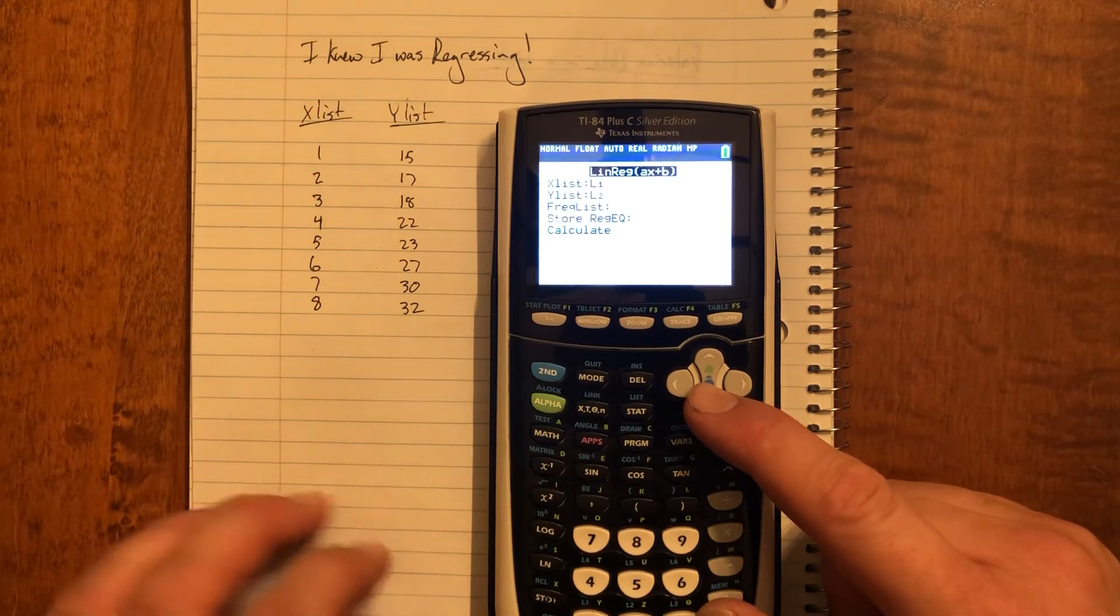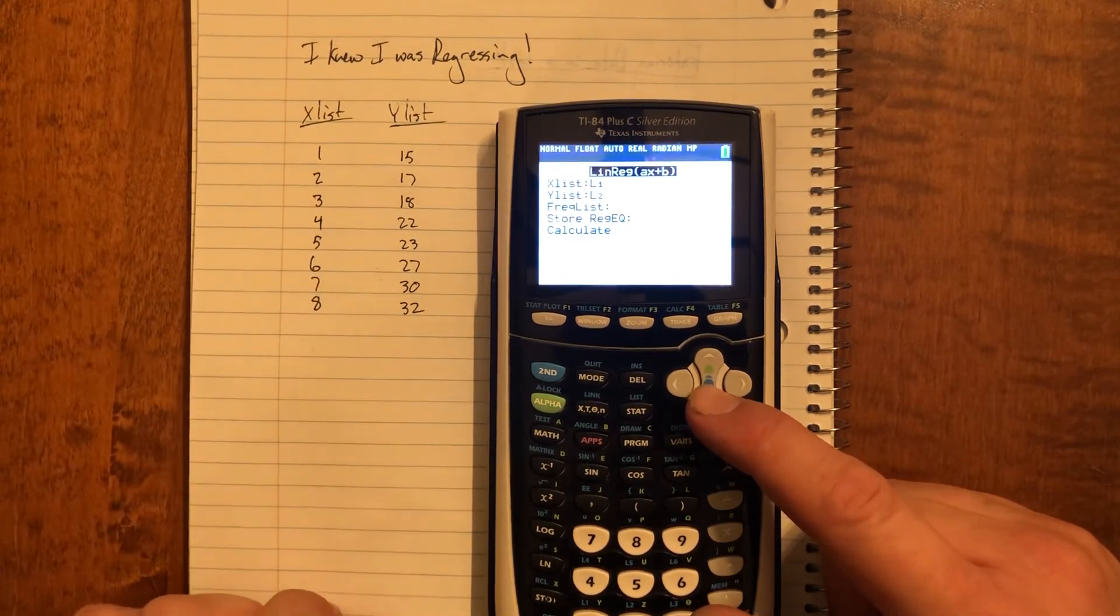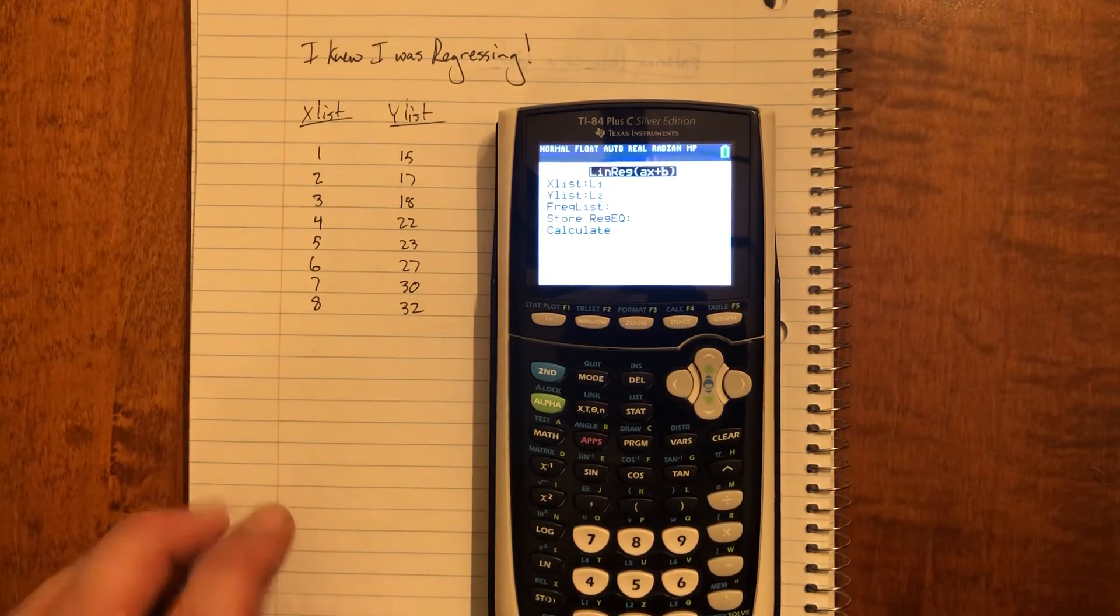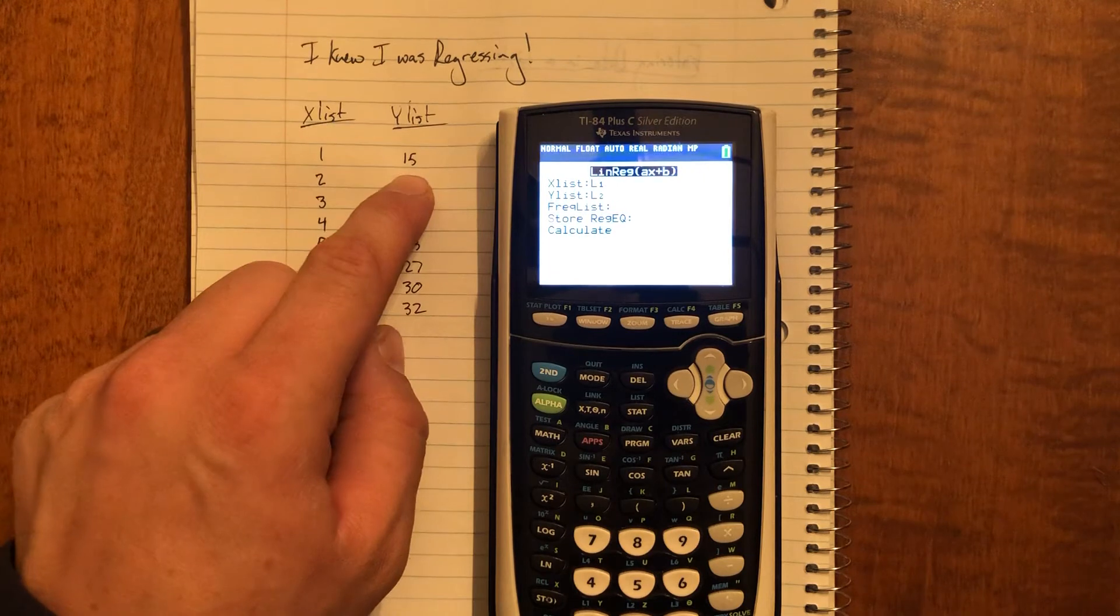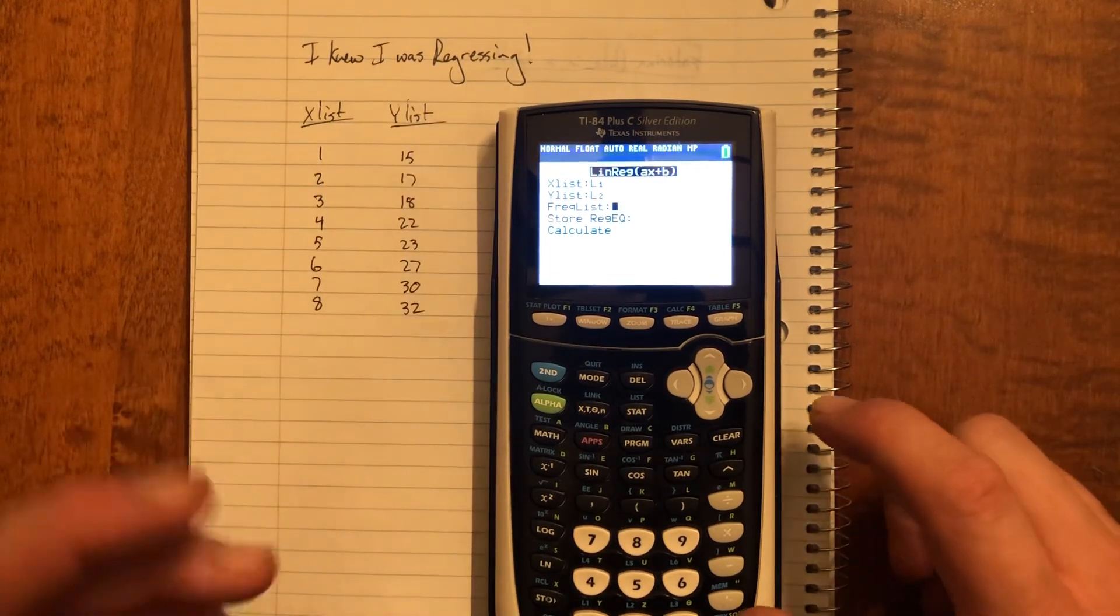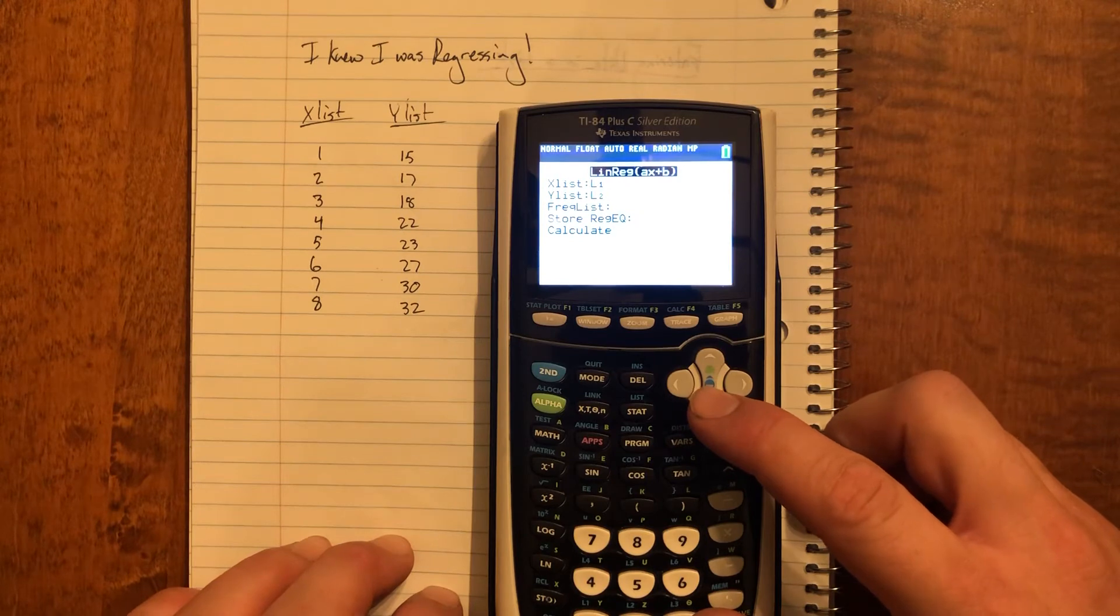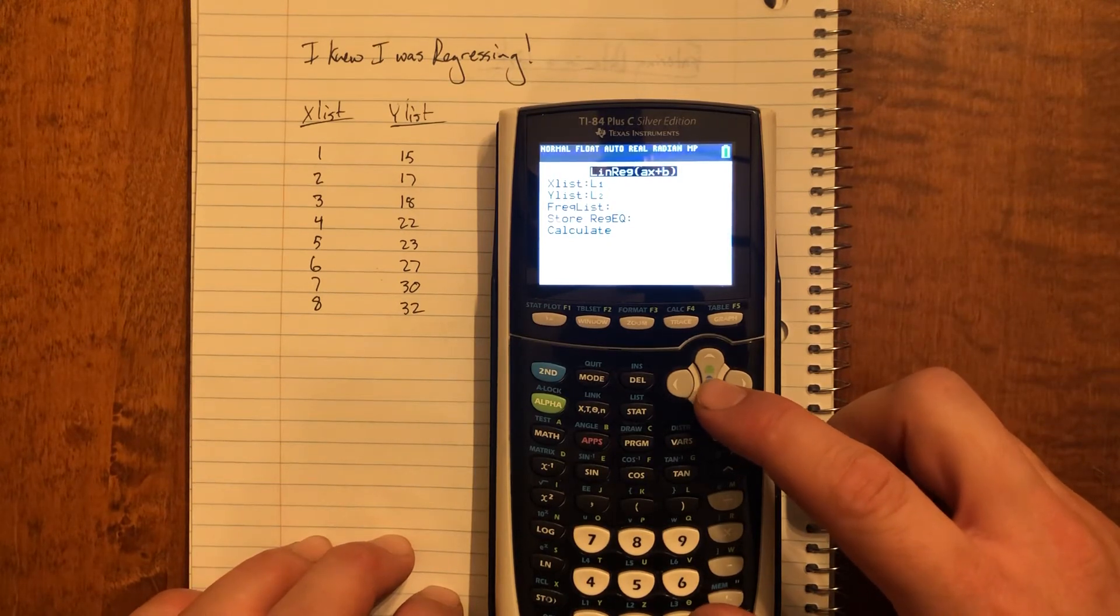Okay, my x list is L1, and I've typed that. My y list is L2. Good. I don't have a frequency list, though. Maybe you would have like a bunch of times that this 15 at 1 was observed, who knows.